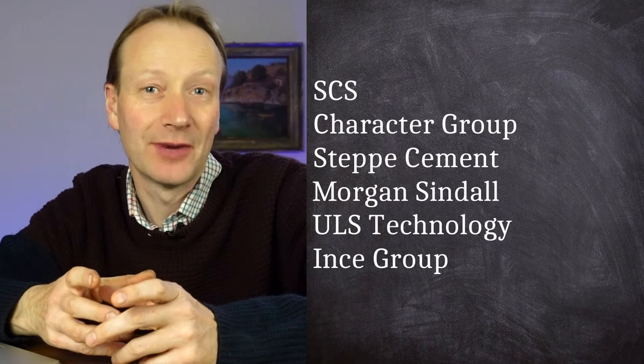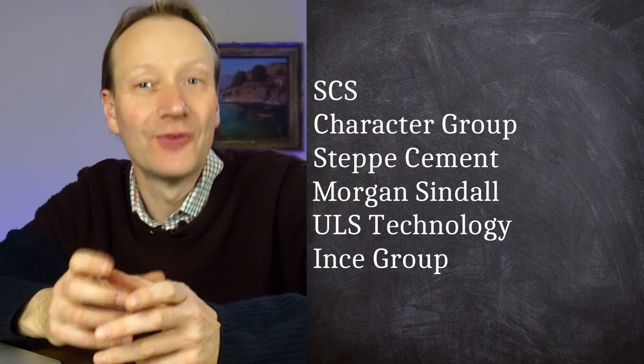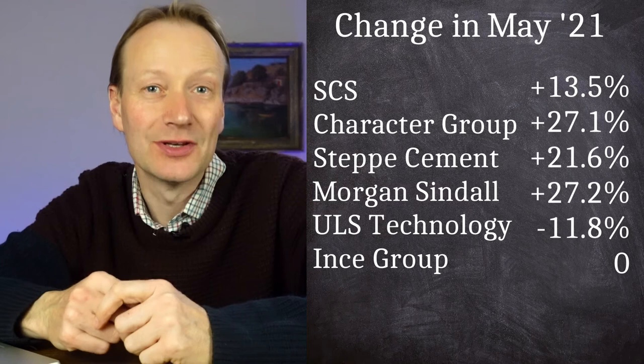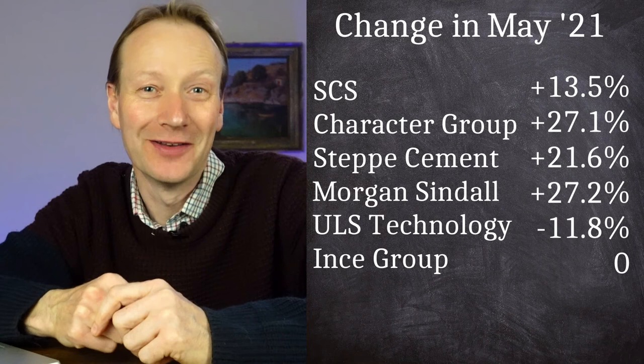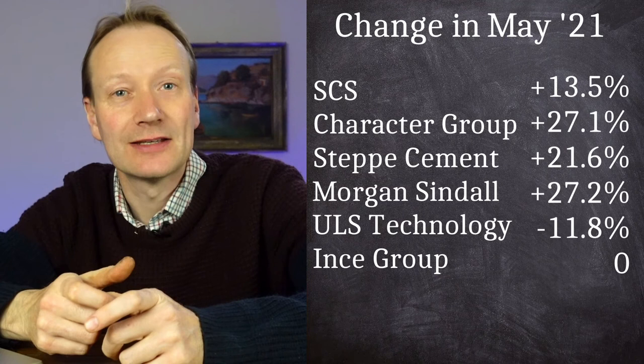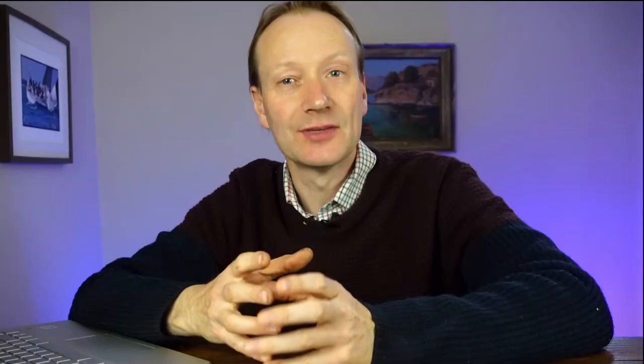How about the performance of the shares that I didn't actually buy, which were on my initial sift list? I've excluded ones like Global Ports that I couldn't buy, and also Kaz Minerals, which was subject to a takeover bid. Here is the list of shares I could have bought but didn't. SCS was up 13.5% over the three weeks. Character Group was up 27.1% — I'll come back to that one. STEP Cement was up another 21.6%, and Morgan Sindel was a really strong performer, up 27.2%. ULS Technology was down nearly 12%, and INS Group had no change at all over the month.